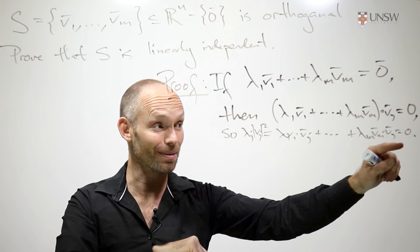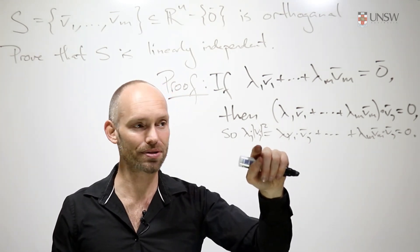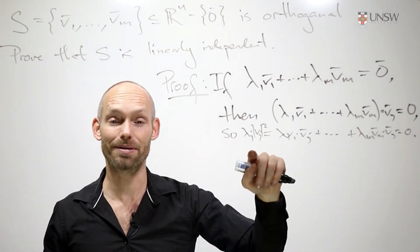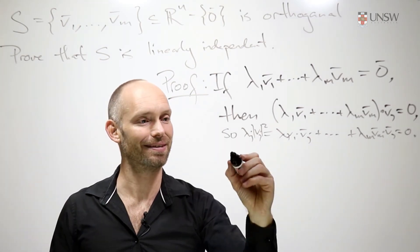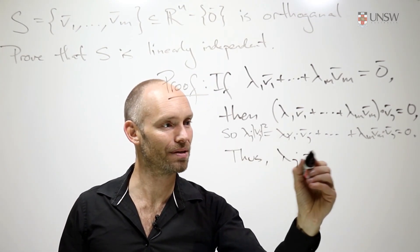Sorry, that should be the zero number, not the zero vector. So we have λ_j times something that's positive is equal to zero. Well, that's only possible if λ_j is actually zero. So we could write thus, λ_j is zero.